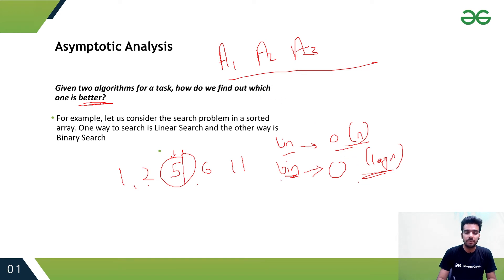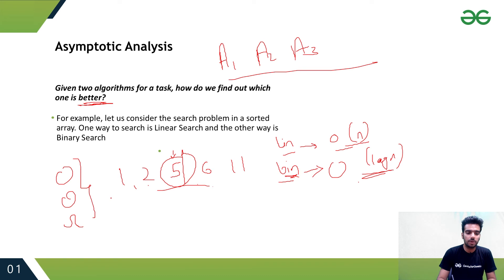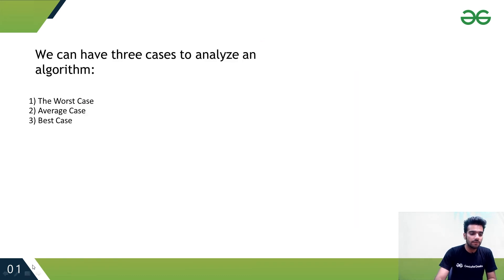We have some asymptotic notations: Big O, Theta, and Omega. These are asymptotic notations that I will teach you in the next lecture. We can also have three cases to analyze an algorithm: the first one is the worst case.